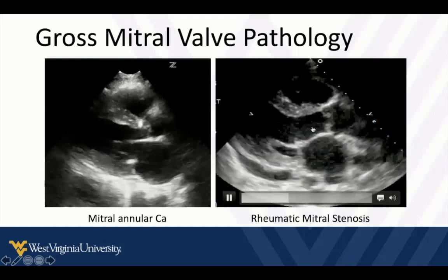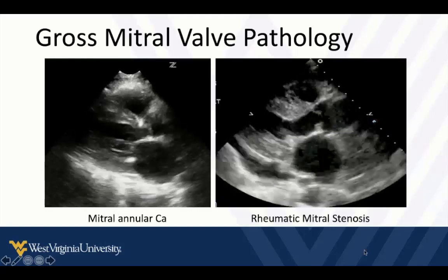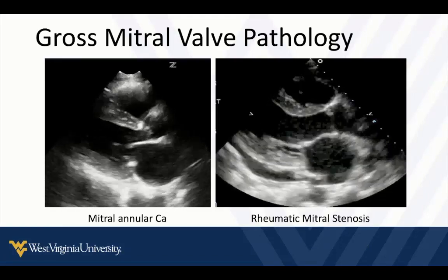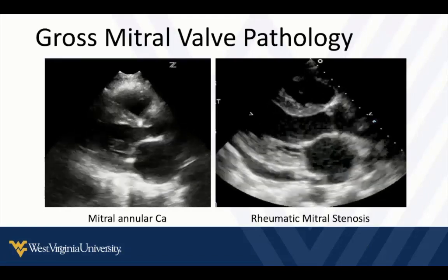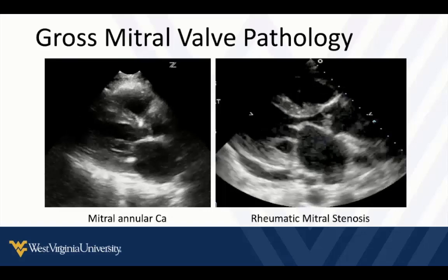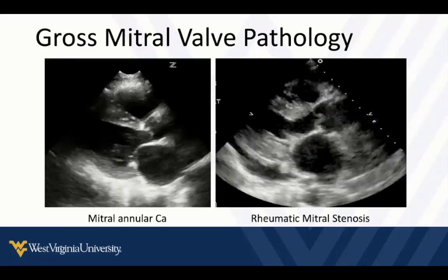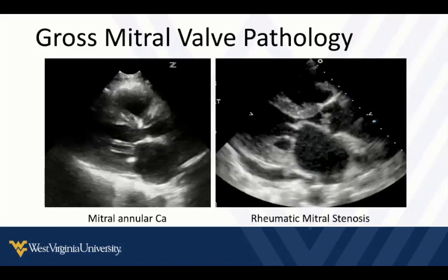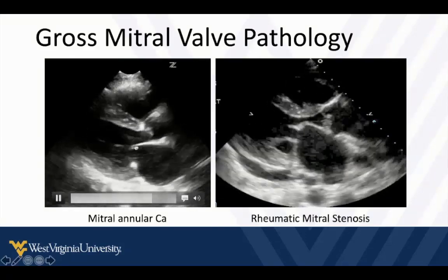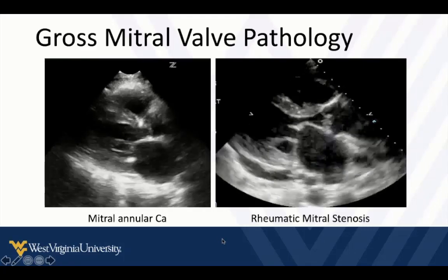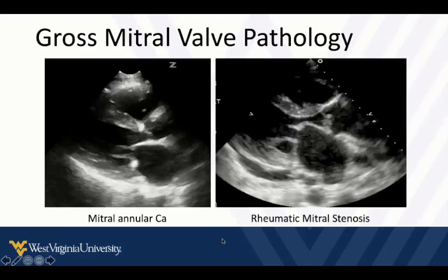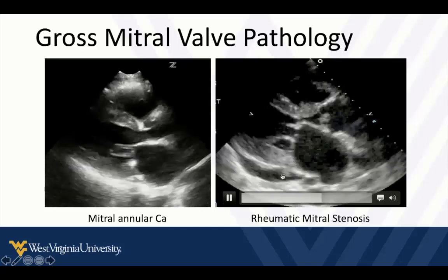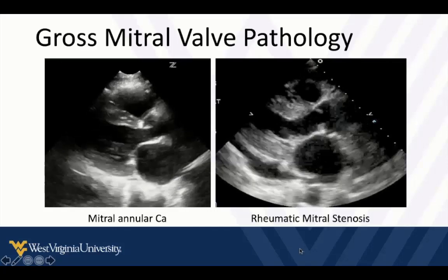I want to differentiate that from rheumatic mitral stenosis, which we don't see very much in the States. What you'll see is a hockey-sticking or hooking appearance of the mitral valve — a characteristic finding of mitral stenosis from rheumatic heart disease, almost pathognomonic. You'll see it on a rare occasion. Most of the time it's not an acute thing, but it's worth recognizing and differentiating from mitral annular calcification. Also note the small pericardial effusion here, anterior to the descending thoracic aorta.